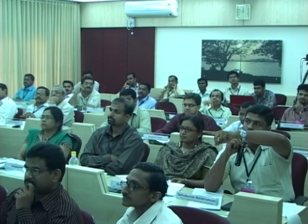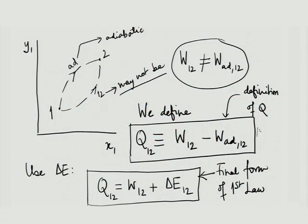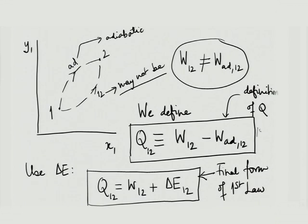Student asks: is W₁₂ necessarily greater than W-adiabatic₁₂? No. If W₁₂ is greater than W-adiabatic₁₂, then Q₁₂ is positive. If it is less, Q₁₂ is negative. There is no restriction on the sign of Q₁₂. It can be equal to, greater than, or less than. If equal, the net Q₁₂ is zero — an overall adiabatic process. If W₁₂ is greater, Q₁₂ is positive — heat is absorbed. If W₁₂ is less, Q₁₂ is negative — heat is rejected.